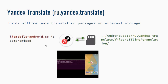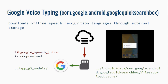The same story applies to Yandex Translate, the most popular Russian translator, where another library, LibMobile Android, is compromised. For OK Google — Google Voice Assistant — the app downloads offline speech recognition files through external storage without any verification. A Man-in-the-Disk attacker app can overwrite such files and crash LibGoogleSpeech. I won't show all my demo videos — I prepared a lot, but the PDF presentation file will link to all of them.